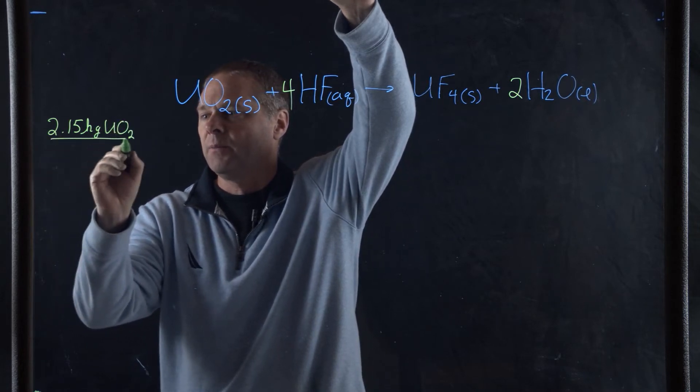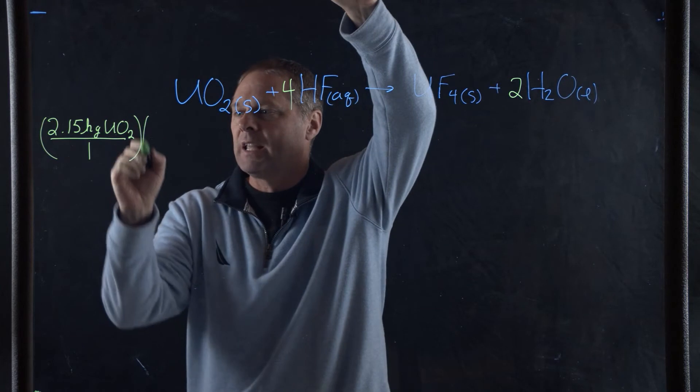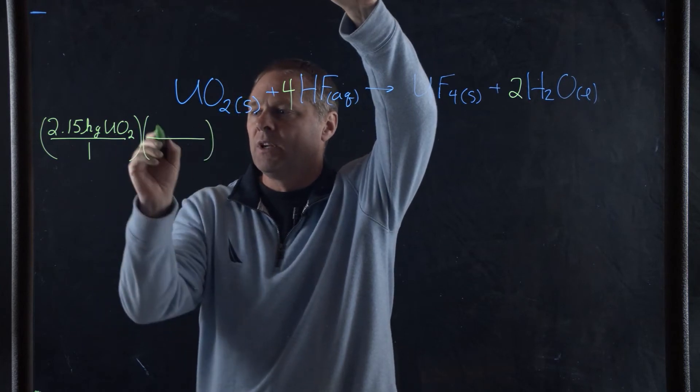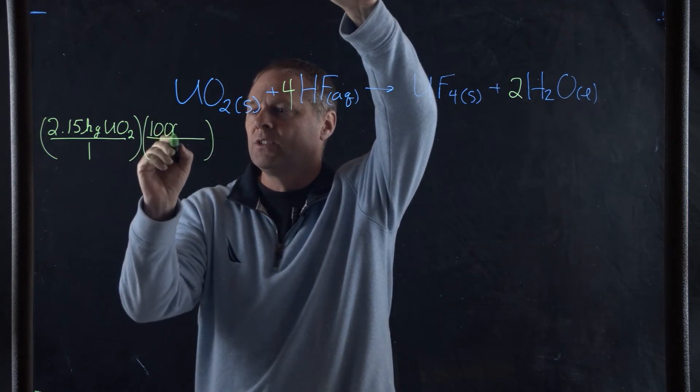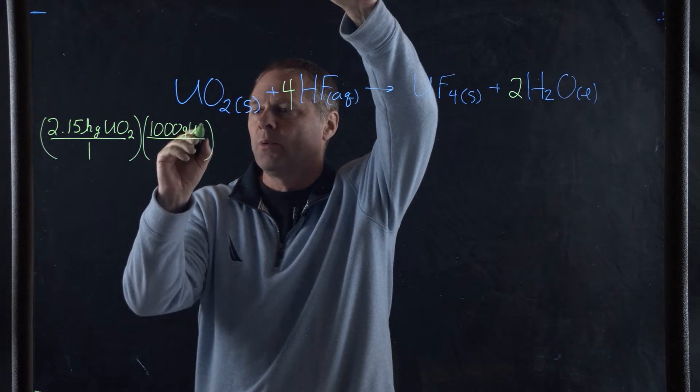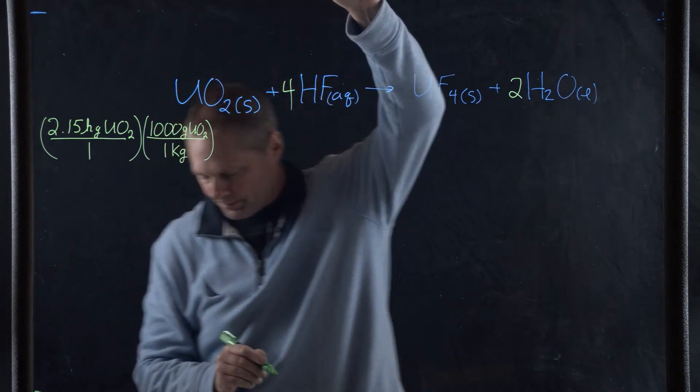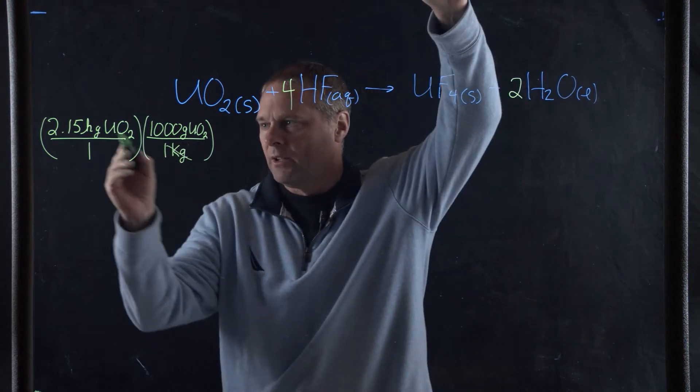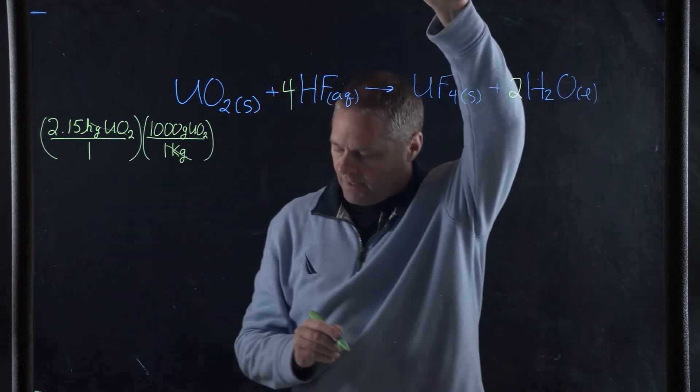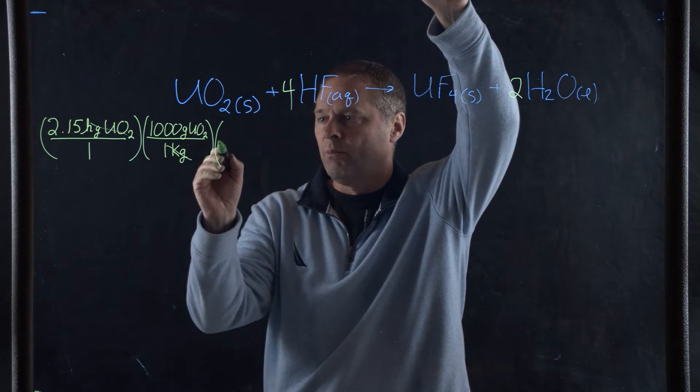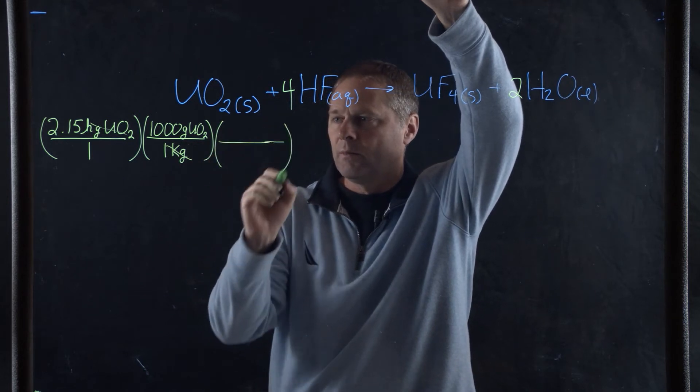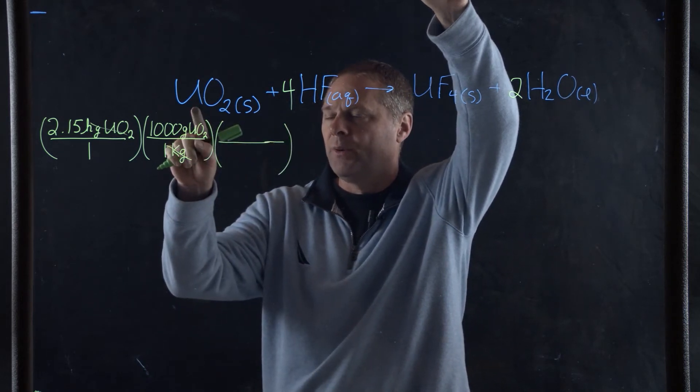If we start with 2.15 kilograms of uranium oxide, we're going to convert this into grams. There's 1,000 grams of uranium oxide in 1 kilogram, so our kilograms cancel. Now we have to convert this into moles because for every 1 mole of uranium oxide we have 4 moles of hydrofluoric acid.